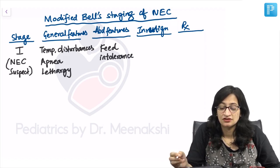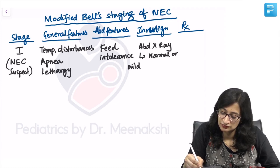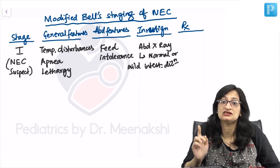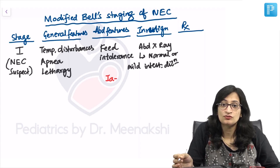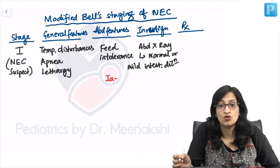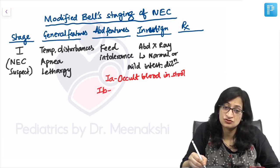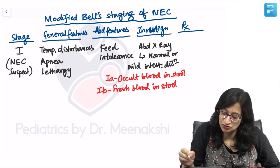On investigation, if you do an abdominal x-ray, it is usually normal or it may show mild intestinal dilatation. The de-identifying feature of stage 1A is that if you do a stool examination, there is no visible blood, but chemical tests will reveal occult blood in stool. In stage 1A you have occult blood in stool, while in 1B you have fresh blood in stool.